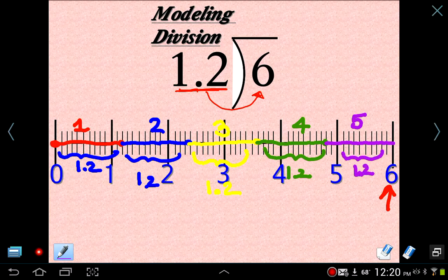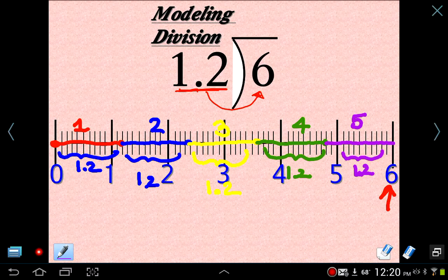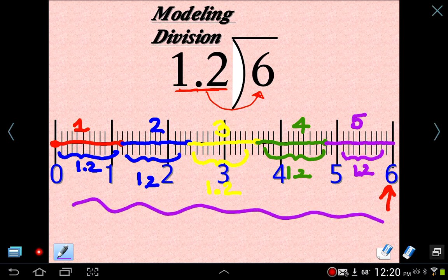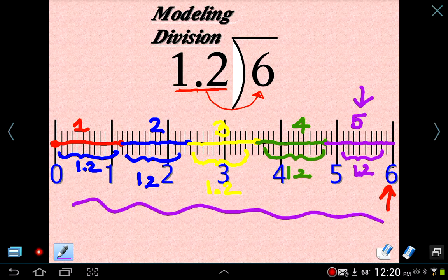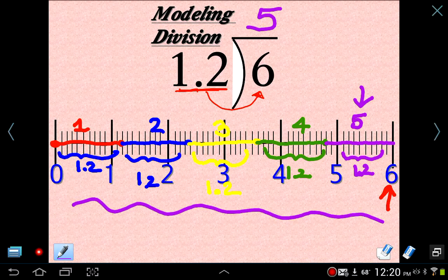So what is our answer? Well look, if you look at all of our groups here, we have five groups. We have five. So 1.2 goes into 6 five times. So I'm not estimating here. That's actually perfect. So there's five 1.2's in 6. So that's one way to do it.